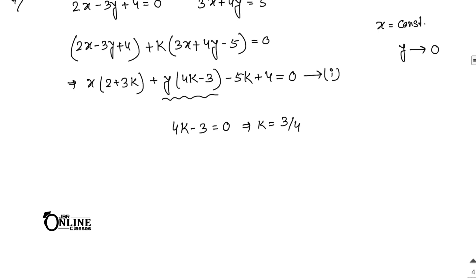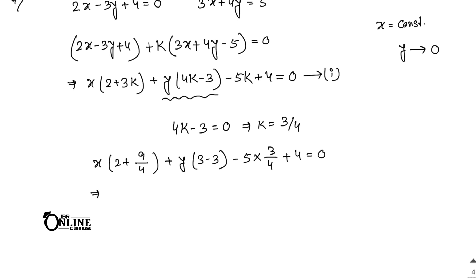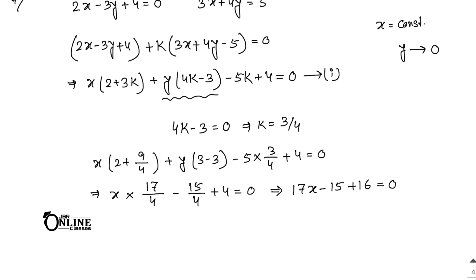Now put the value of k in equation number 1. So x into 2 plus 3 into 3 by 4, that is 9 by 4; and y into 4 into 3 by 4 minus 3, that is 0. Then the constant: minus 5 into 3 by 4 plus 4 equal to 0. With LCM 4: x into 8 plus 9 by 4, that is 17 by 4. Then minus 15 by 4 plus 4 equal to 0. Multiplying by 4: 17x minus 15 plus 16 equal to 0. Final answer: 17x plus 1 equal to 0.